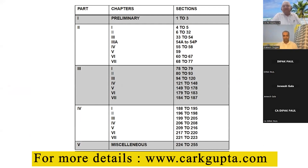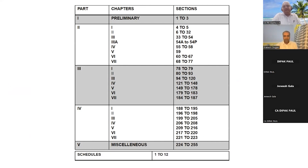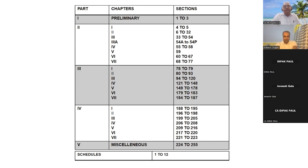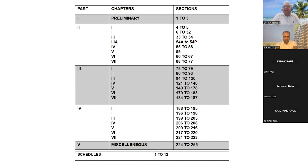There are some definitions which are given in respective parts and they apply to that part only. But the definitions which are given in part one, which is the preliminary part, they apply to the whole of the code. For example, if a definition is given in part two, it will apply to part two only; if given in part three, it will apply to part three only. But definitions contained in part one apply to the whole code.